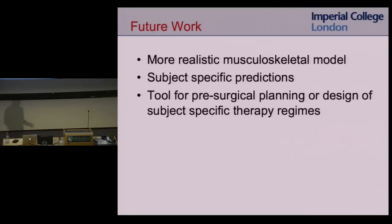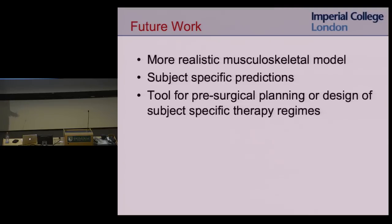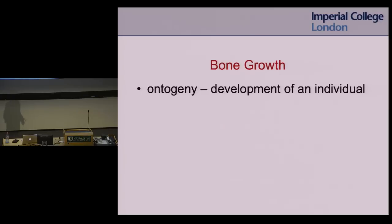We used a scaled-down version of an adult, which doesn't take into account child morphology, so we're looking at using a more realistic model. This is going towards developing subject-specific predictions. If a doctor came to me and said, this is the way the child walks, what loads do we need to ensure normal growth? We could provide a tool for pre-surgical planning or design of subject-specific therapy to ensure normal growth and proper loads on the bone. That's an example of bone adaptation in ontogeny, or development of an individual.